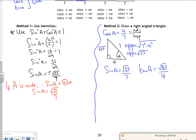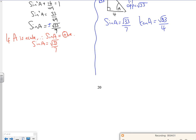To find the tan now, I need to use tan A is sine A over cos A. So tan A is root 33 over 7 divided by cos A, which was 4 over 7. The sevens cancel, tan A is root 33 over 4.